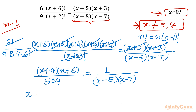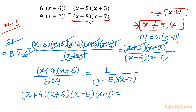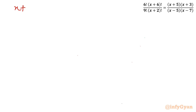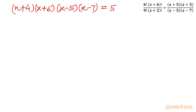Cross multiplying gives us one quartic equation: (x+4)(x+6)(x−5)(x−7) = 504. This is our ultimate quartic equation that we need to solve. For method number 1, I will use a substitution.